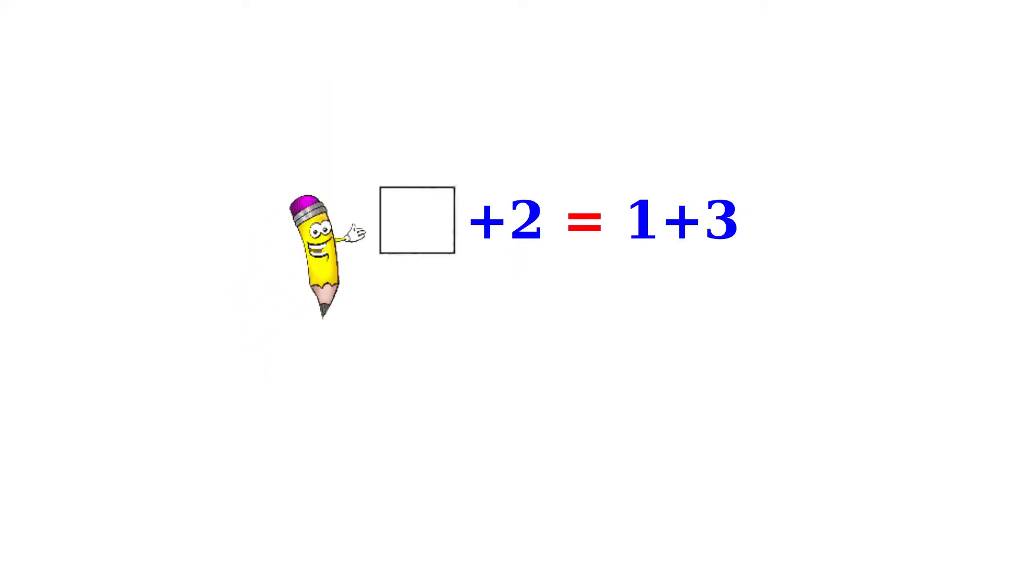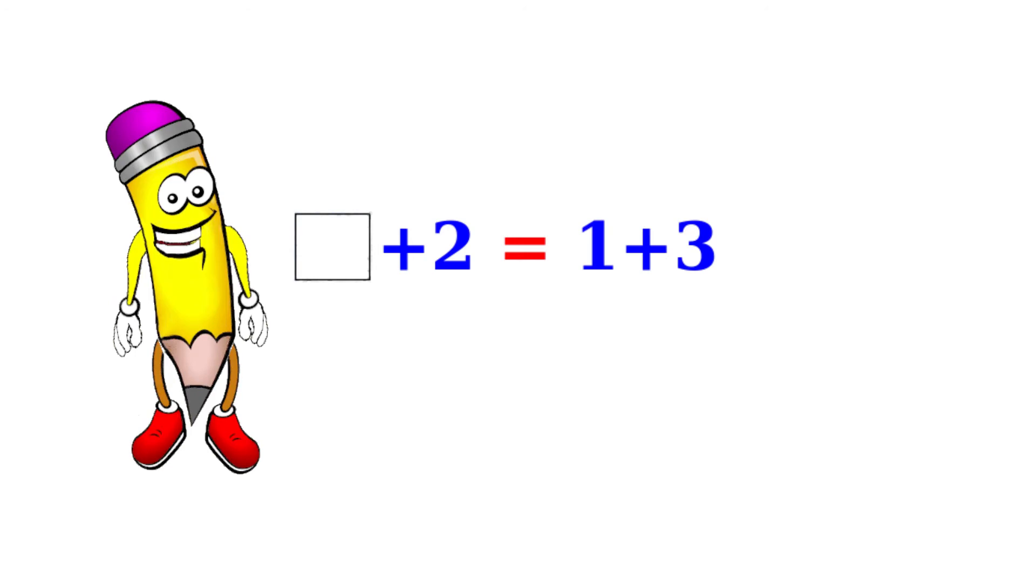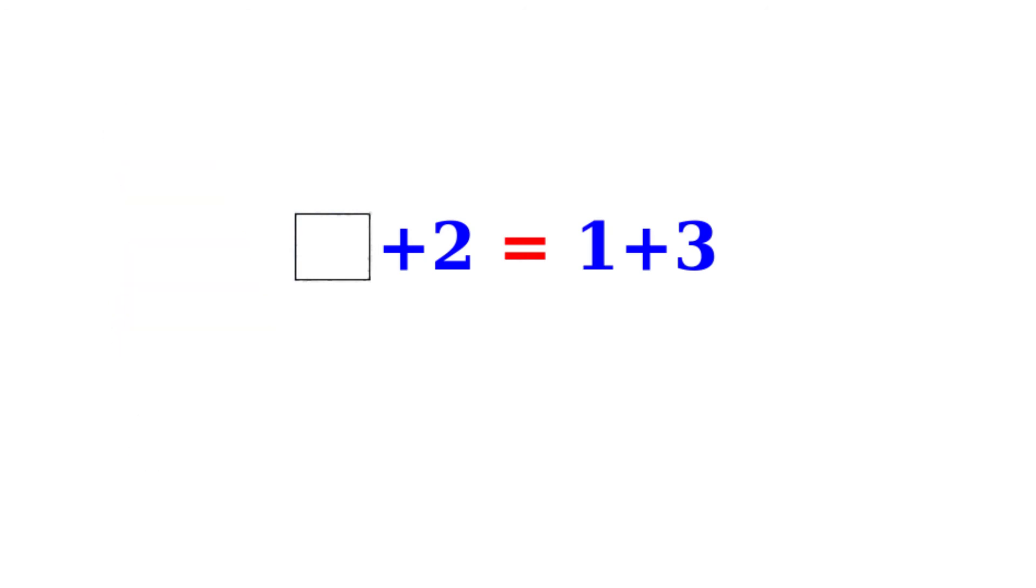Now suppose that one side of this equation has a number missing. Since we know both sides are equal, the missing number has to equal the sum or the total of the other side.